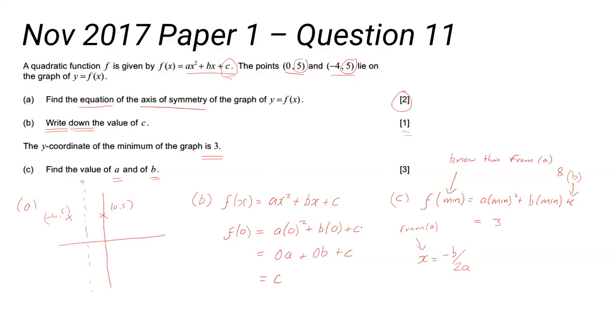Just make sure that it goes through the point (-4,5), the point (0,5), and that its minimum value is 3. If you do that, you get that reassurance that you know you've got that question right and you can relax in the safe knowledge you've got six marks. Are there any questions on that?